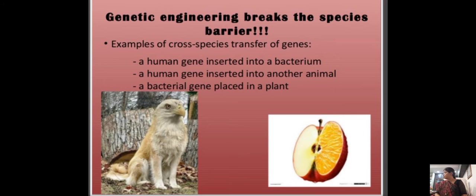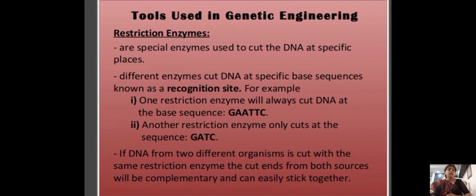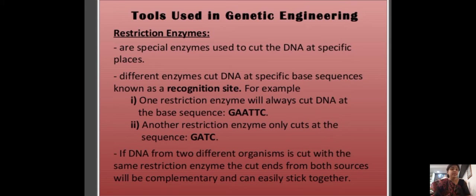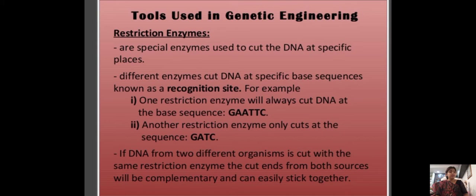Tools used in genetic engineering: the first tool is restriction enzymes. A restriction enzyme is the cutting enzyme, also called the molecular scissors. These are special enzymes used to cut DNA at specific places. Different enzymes cut DNA at specific base sequences known as the recognition site.